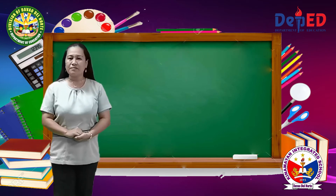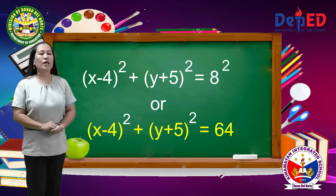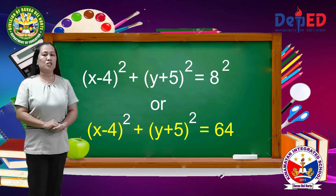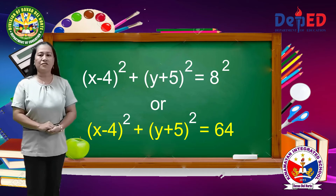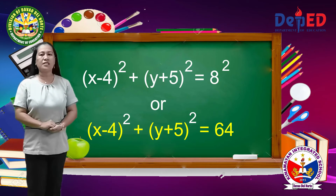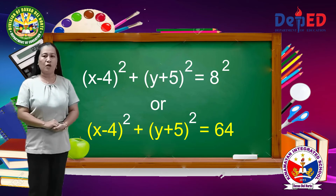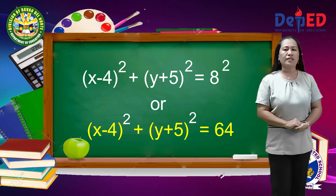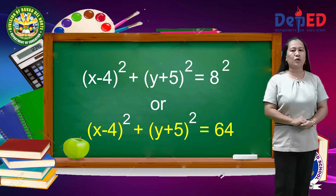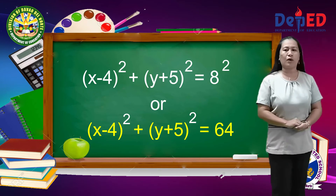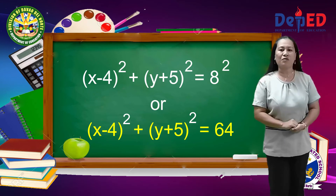the equation is: quantity x minus 4 squared plus quantity y plus 5 squared equals 8 squared, or quantity x minus 4 squared plus quantity y plus 5 squared equals 64.